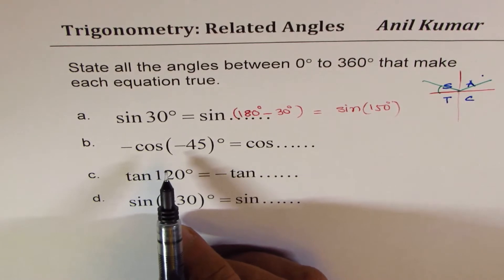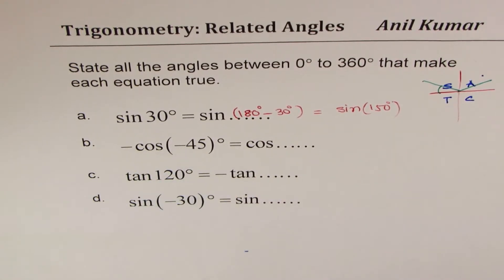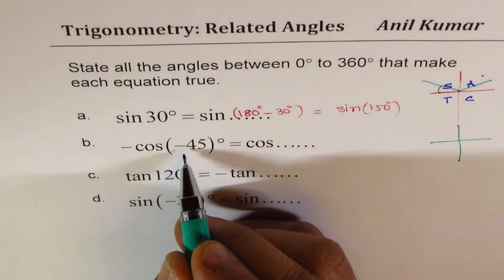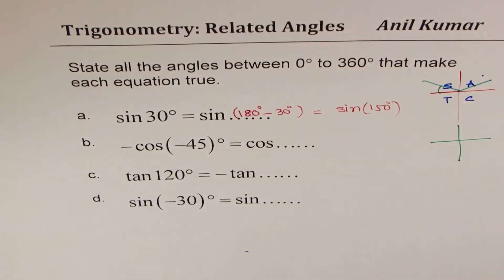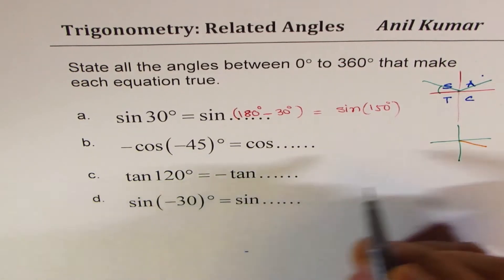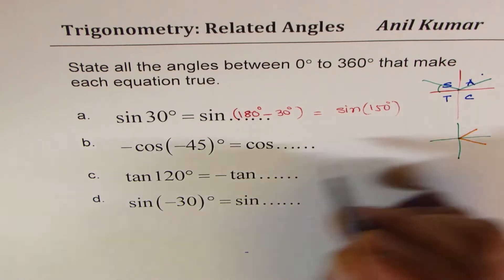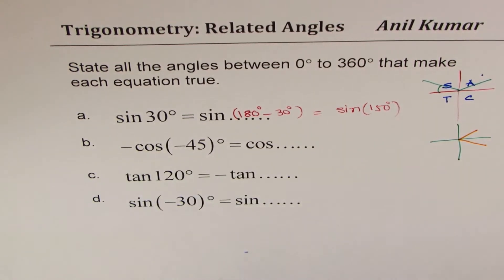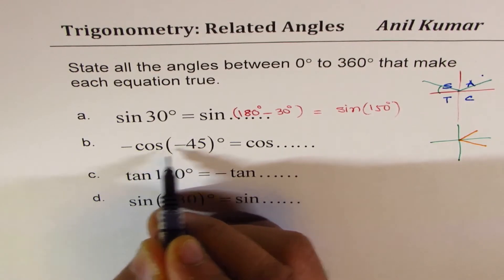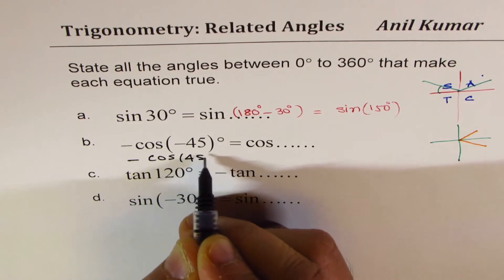Now let's look into the next one. It is minus cos minus 45. So when we are talking about minus cos minus 45, minus 45 is something here. As you know, cos is positive here. But it could be written as in this quadrant with a negative sign. So I could write this as minus cos 45 degrees.